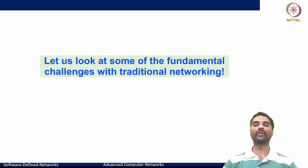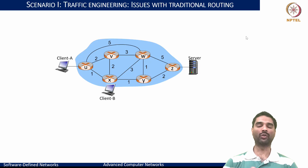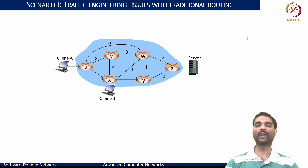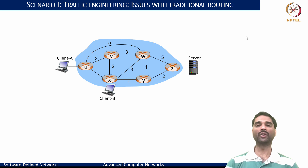Let us look at some of the fundamental challenges that we would encounter with traditional networking. This would help us to better understand and appreciate the role of SDN and why we would need it. Consider a topology as shown here with client A trying to interact with the server on the other end connected to router Z, and the link weights trying to show potentially the latency of communication.